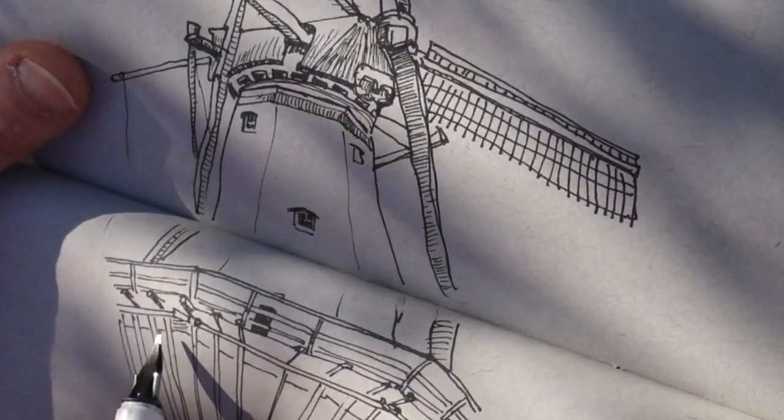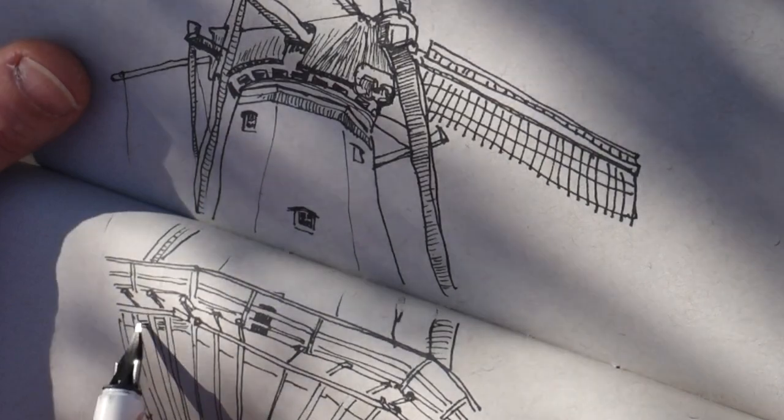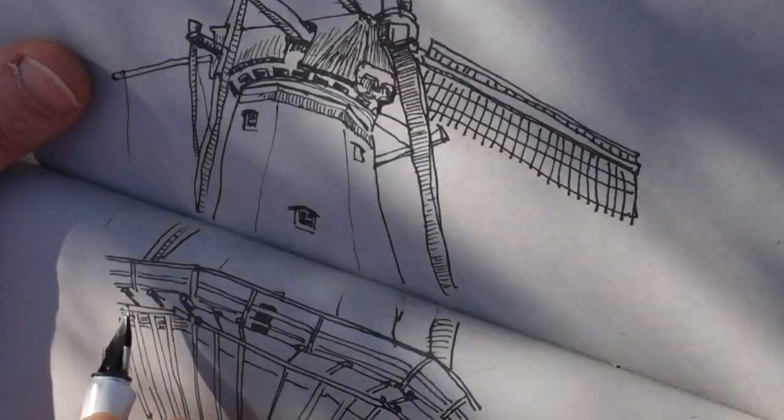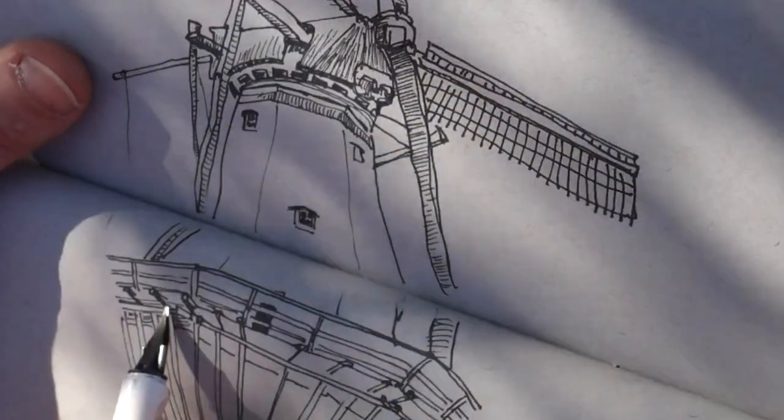To achieve some thinner lines, I'm turning the tip of my fountain pen and using that side. This is very handy—I only need one pen, and still I can use a variety of thickness in line.